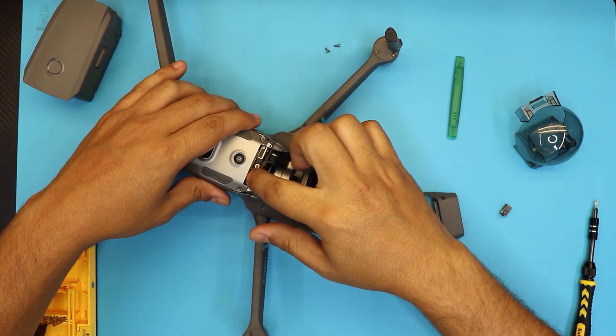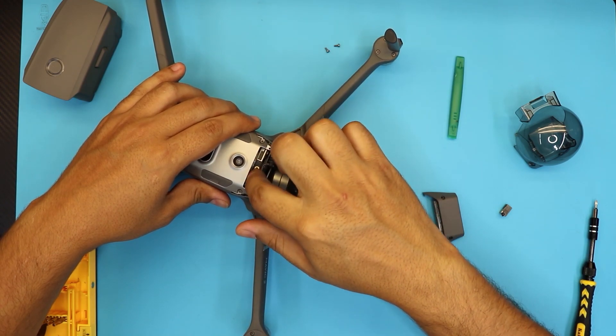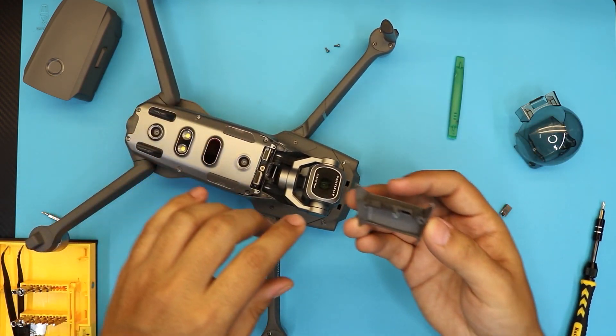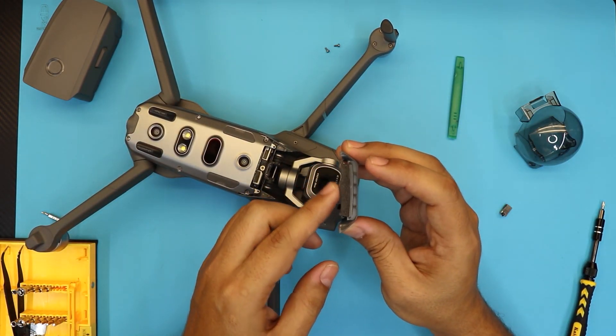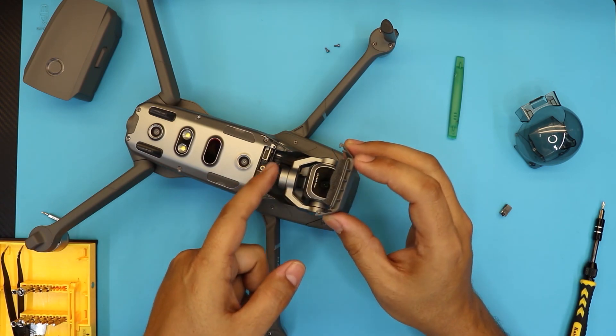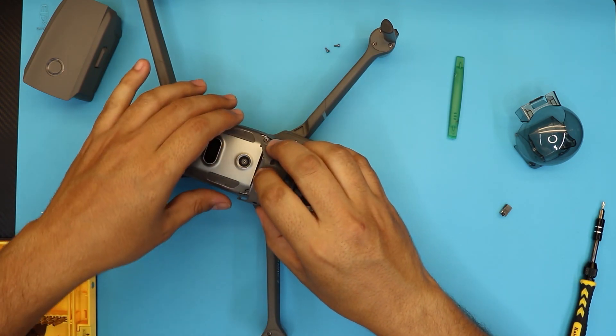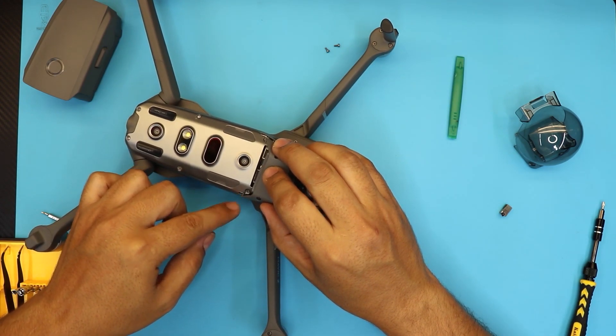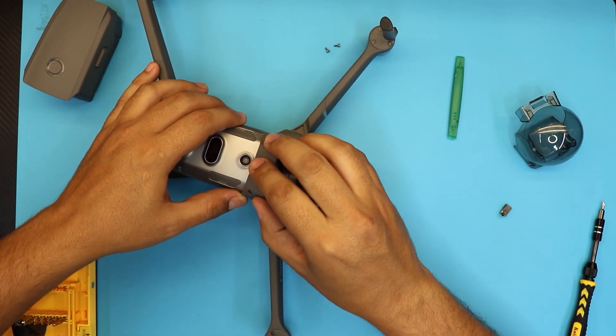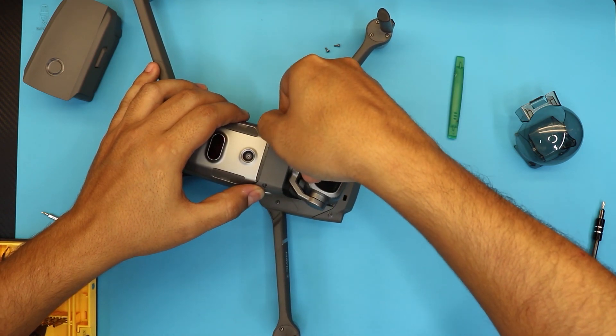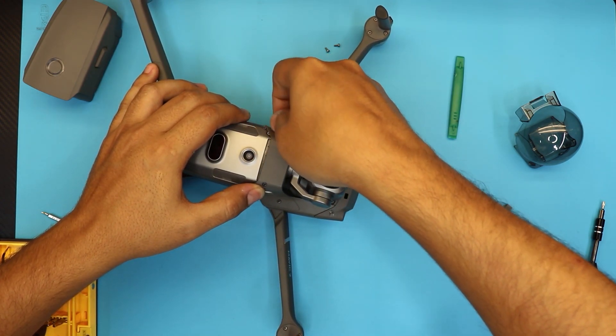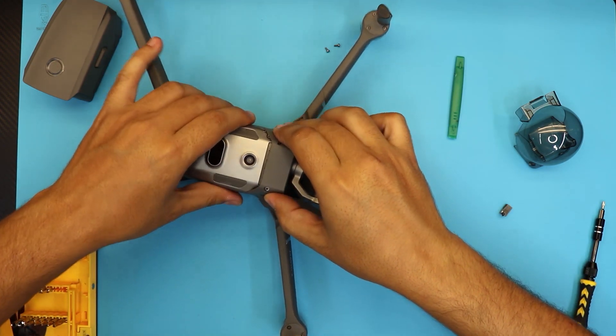Once you got there, just push again on the connectors, make sure they are nice and connected. You can clean up the sponge right here. This sponge keeps those connectors in place. Put one of the hooks in, and put it like that, and just pull apart the other one, and make sure it's in place.